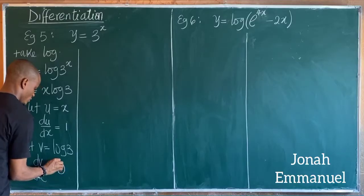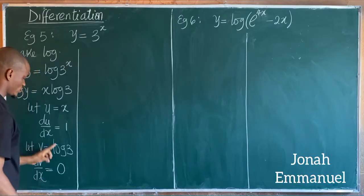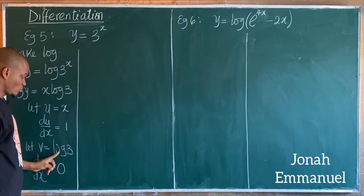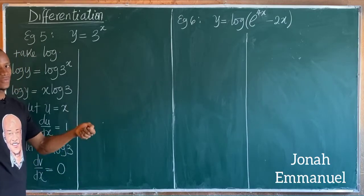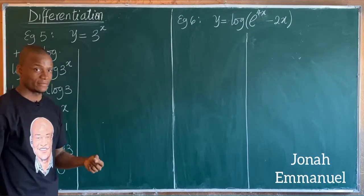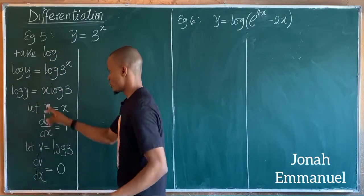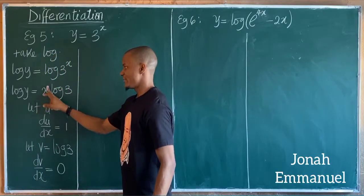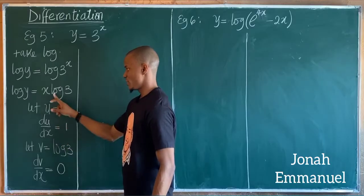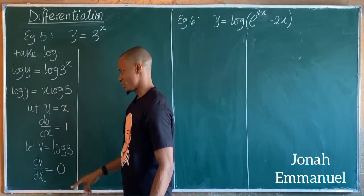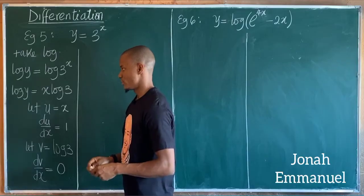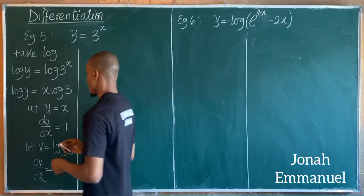Log 3 is a constant: case one, it has no x term; case two, punching log 3 into a calculator gives a fixed value. So dv/dx equals zero. Hence u is x with du/dx equal to one, and v is log 3 with dv/dx equal to zero.